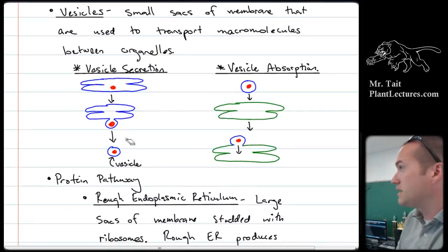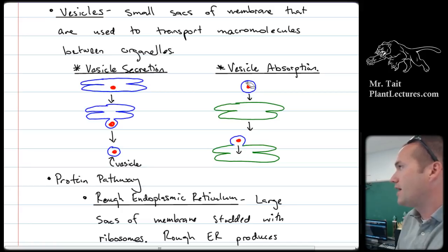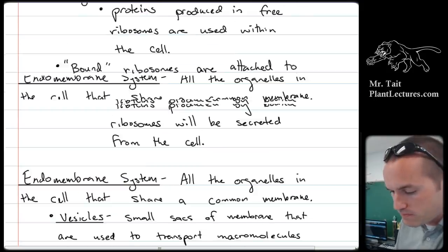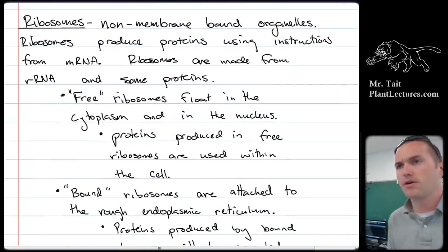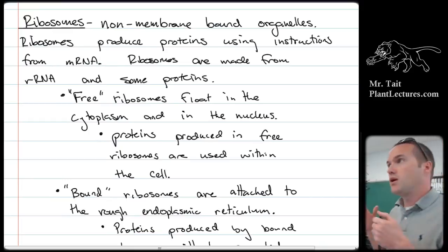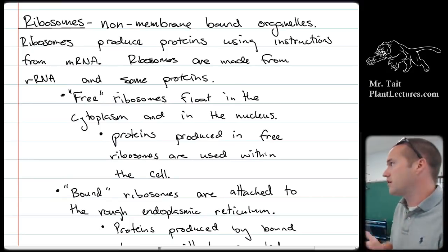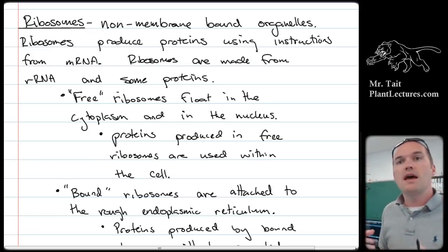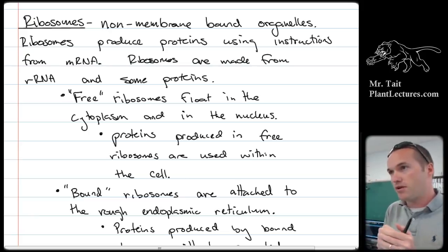The big part about the endomembrane system is that one organelle can secrete a vesicle and that vesicle can meet up with another organelle and fuse with it, because they all share the exact same plasma membrane. Ribosomes are organelles shared between prokaryotes and eukaryotes because they're non-membrane bound. In eukaryotes, free ribosomes float around and make proteins used inside the cell, and bound ribosomes are bound to the rough ER and make proteins for export from the cell.